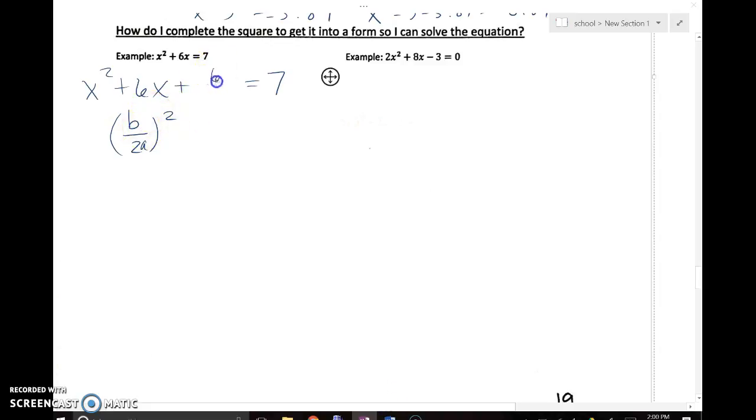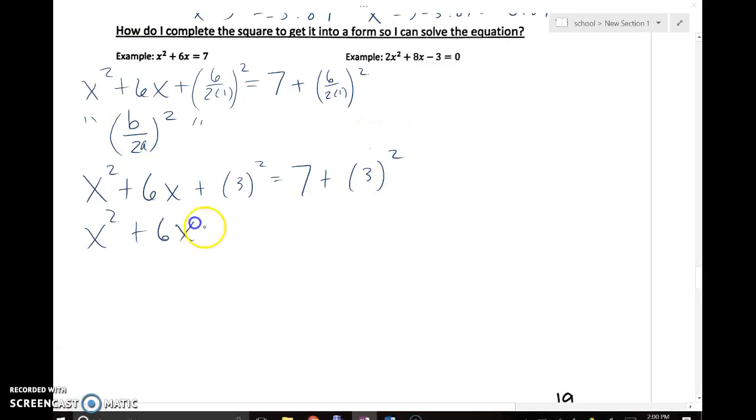The b value this time is 6, and the a value was 1, so then I have that entire thing squared. You know enough about equations to understand that if I add something to the left side, I've got to add the exact same thing to the right side to keep everything equal. So x squared plus 6x, and now I simplify: 6 divided by 2 is 3, so now I've got 7 plus 3 squared, and I continue to simplify: x squared plus 6x plus 9 equals 7 plus 9.